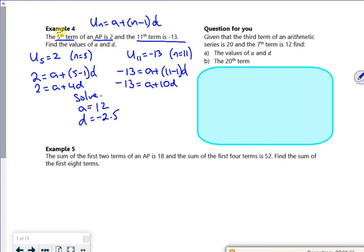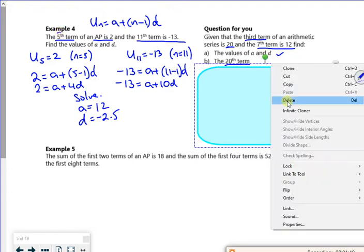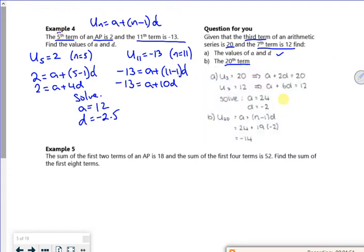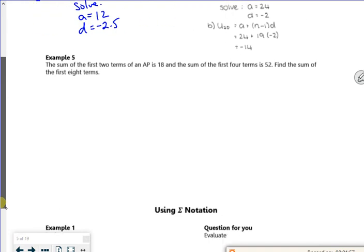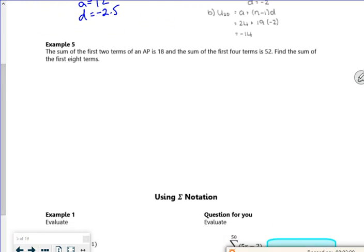From there, I might be asked to find a different term. Like this question for you, it tells you that the third term is 20 and the seventh term is 12. You can find a and d that it wants you to do something with. Please pause it, have a go at it, don't just copy it.